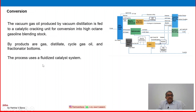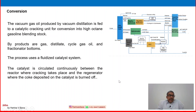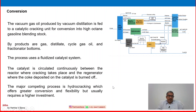The vacuum gas oil produced by vacuum distillation is fed to a catalytic cracking unit for conversion into high-octane gasoline blending stock. From the atmospheric unit, feed goes to the vacuum unit, and then to the FCC — fluid catalytic cracker. The product streams go to fractionation, blending, and hydrotreaters to yield the desired products, with residue becoming fuel oil. By-products include distillate, cycle gas oil, and fractionation bottoms. The process utilizes a fluidized catalyst system, circulated continuously between the reactor where cracking takes place and the regenerator where coke deposited on the catalyst is burned off. The major competing process is hydrocracking, which offers greater conversion and flexibility but usually requires a higher investment.